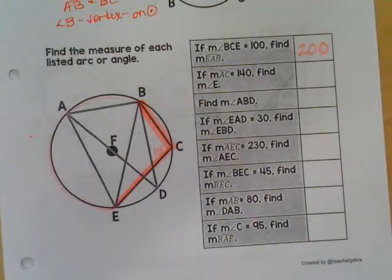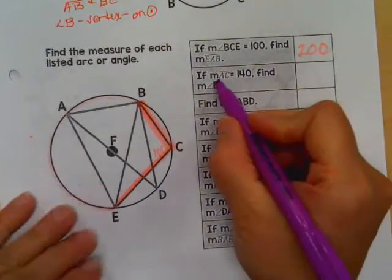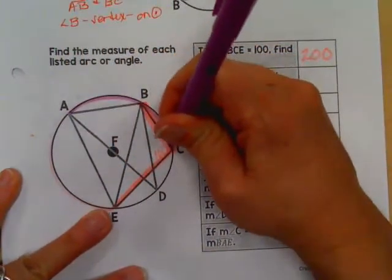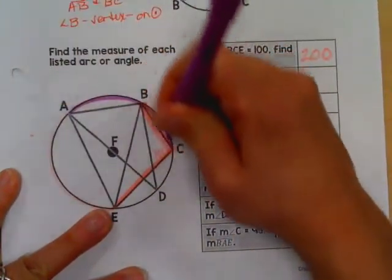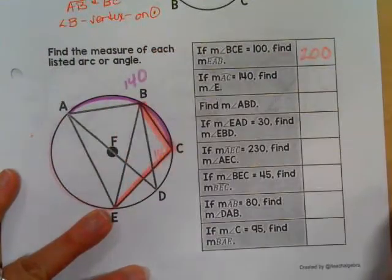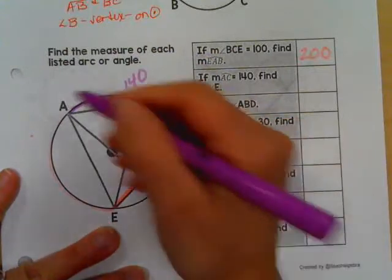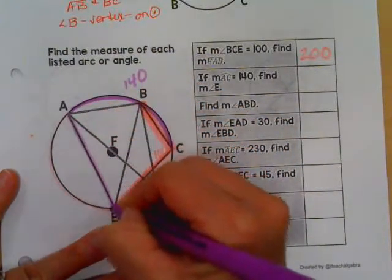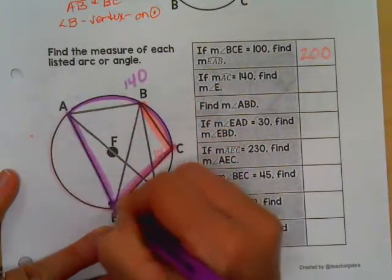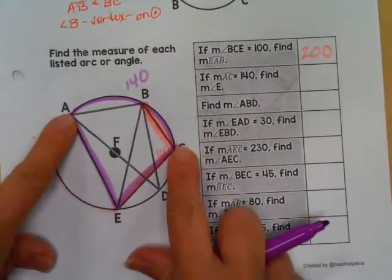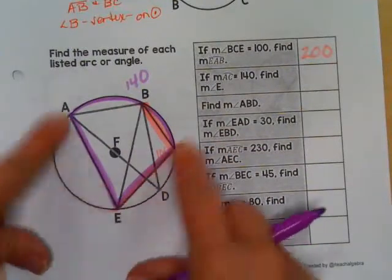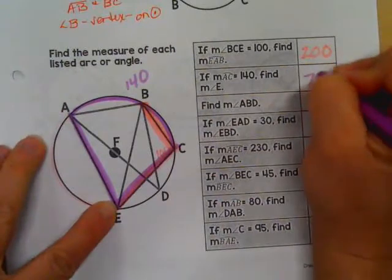I'm going to switch colors. If the measure of arc AC, so from A to C, and be careful if they're asking about an angle or an arc, the measure of arc AC is 140 degrees. Find the measure of angle E. Well, if you notice, angle E happens to match the ends of the arc. So from A to C is 140. That means angle E has to be half of that, or 70.